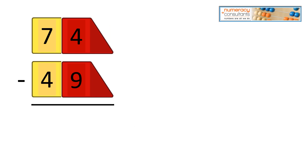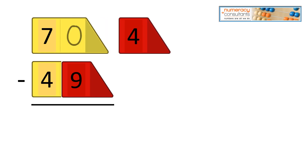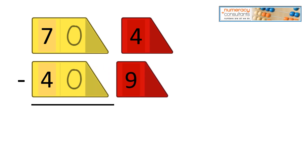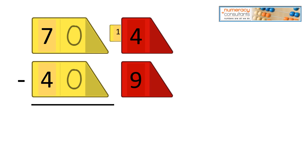74 minus 49. We'll split them off. We run into trouble because 4 minus 9 is not something we can do. So we need to shift a 10 over from the 70. Our 70 becomes 60, and we now have 14. 60 minus 40 is 20, and 14 minus 9 is 5. Our answer is 25.